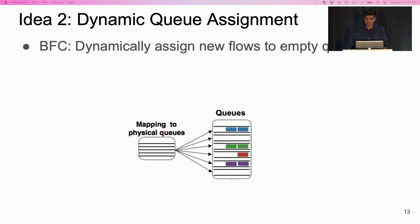In BFC, the switch tracks empty queues available at each egress. When a new flow arrives, the switch assigns it an empty queue if one is available. If there are no empty queues, then the switch assigns it a queue at random.